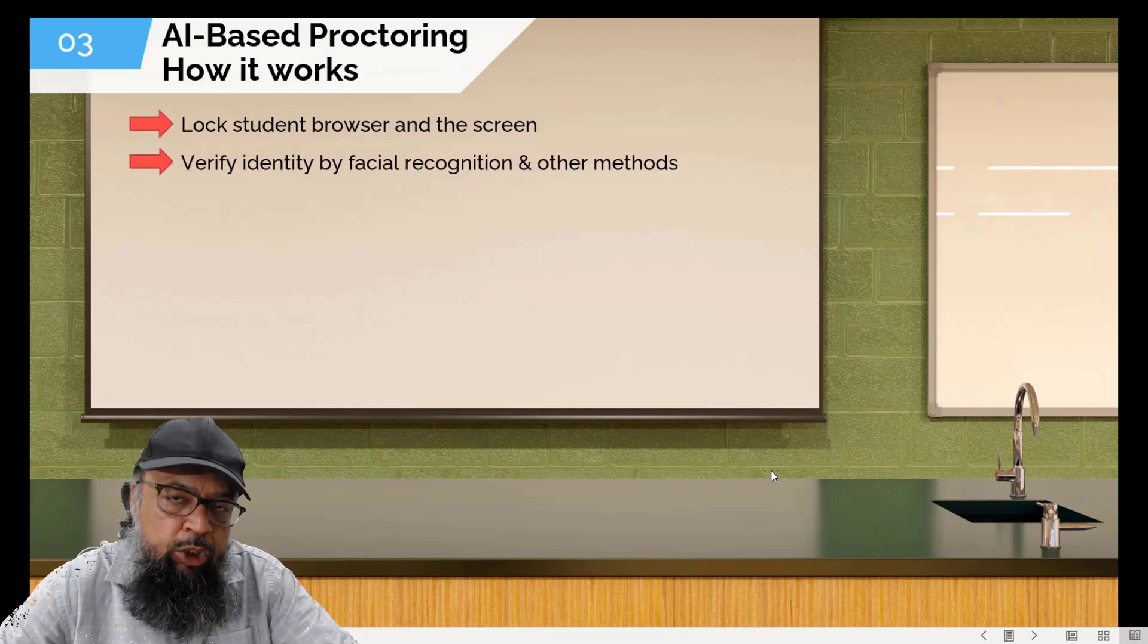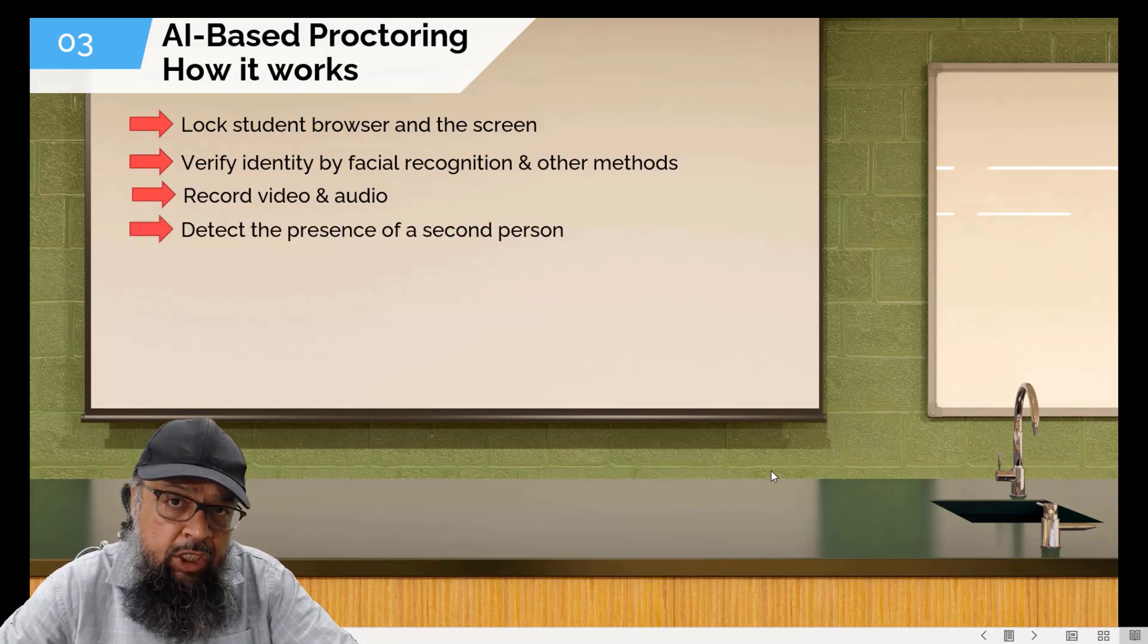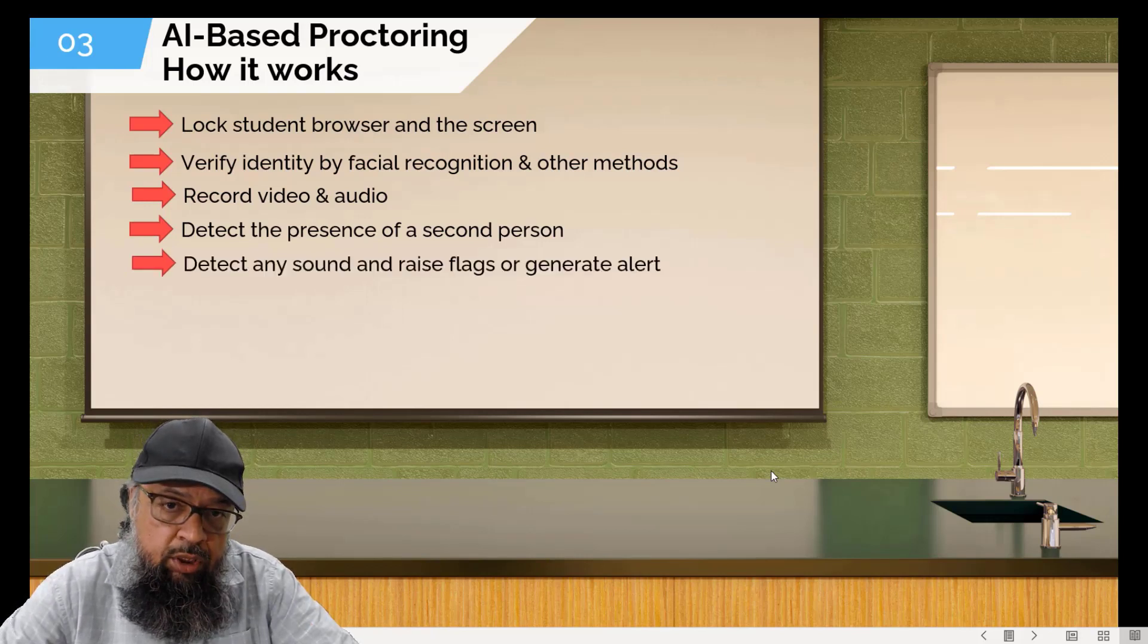Then we got the tools which were able to verify the identity by using these artificial intelligence or machine learning algorithms. They can also record audio and video, they can detect the presence of another person using the algorithms which we discussed earlier, they can also detect sound and raise flags or generate alerts.